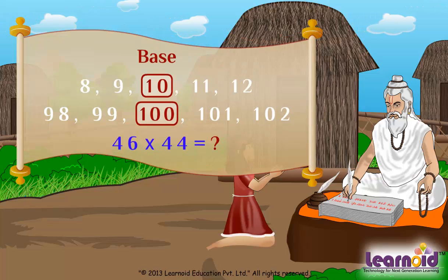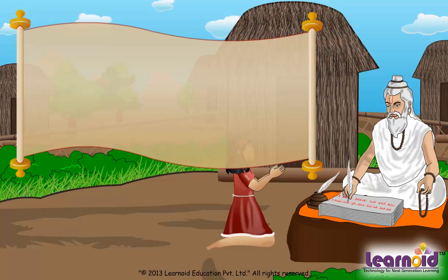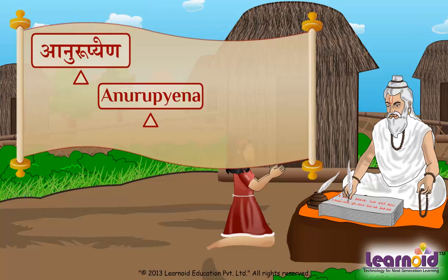For such multiplication we will use Sub Sutra Anurupyena, which means proportionately.